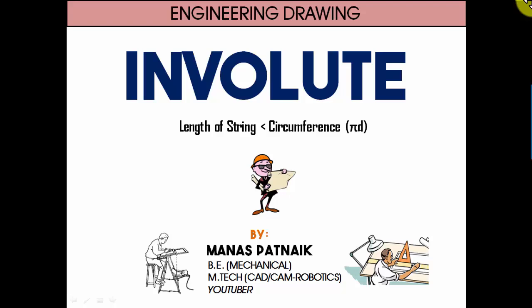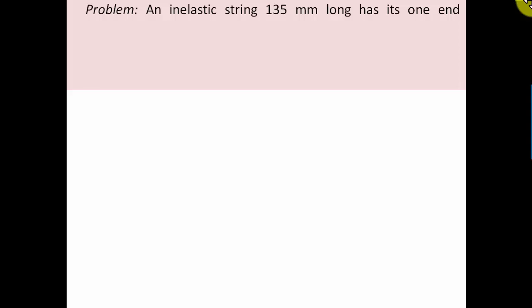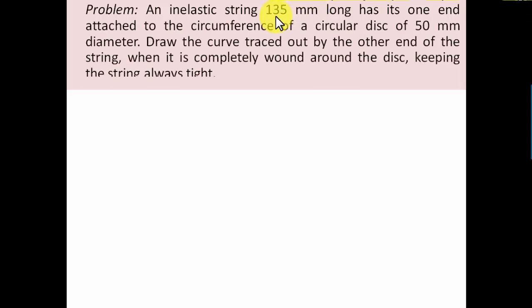Let's see what the problem has in store. An inelastic string 135 mm long has its one end attached to the circumference of a circular disc of 50 mm diameter. Draw the curve traced out by the other end of the string when it is completely wound around the disc keeping the string always tight.